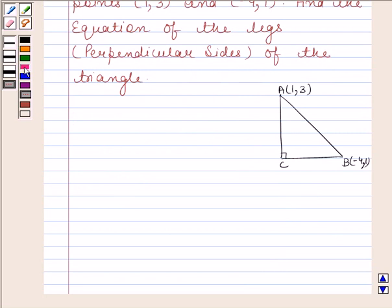Let's now begin with the solution. Let ACB be the right-angled triangle at C.